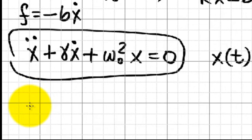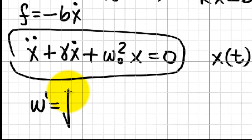Omega prime, the damped angular frequency, is the square root of omega zero squared minus gamma squared over 4.